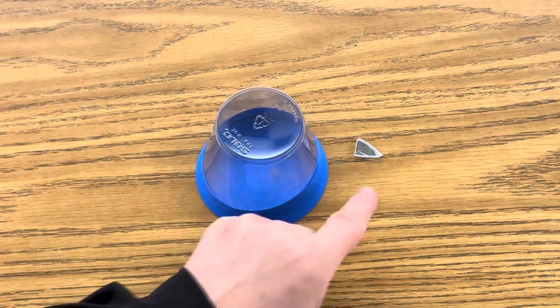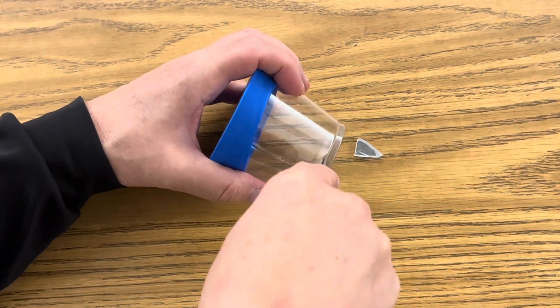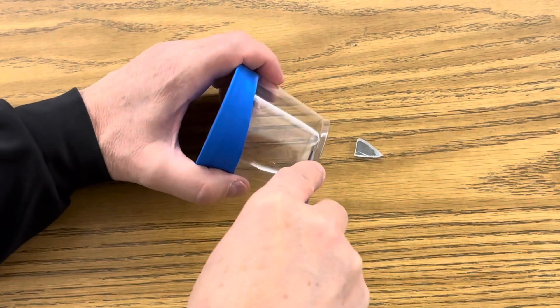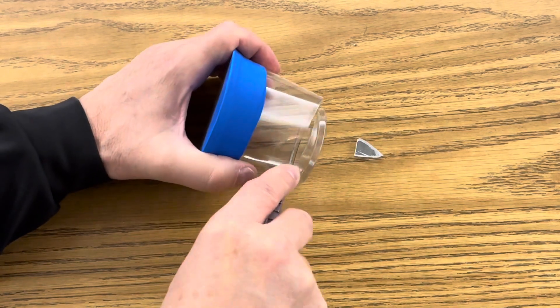Okay, now before you glue the mirror onto the center of the diaphragm, you've got to cut the back part of your cup off. And this is to put it up to your Bluetooth speaker. So you just want to cut the end of it off.